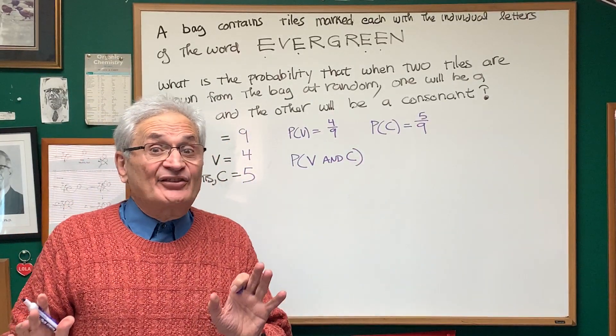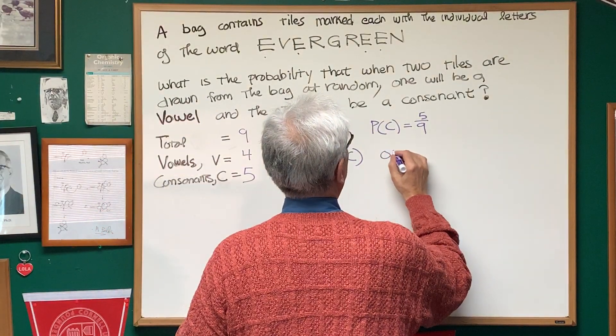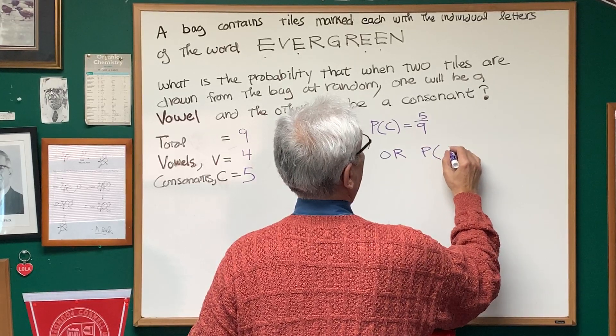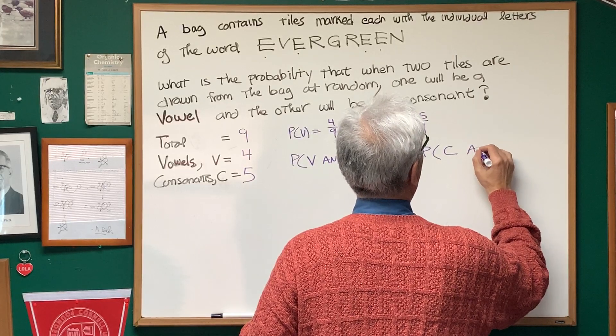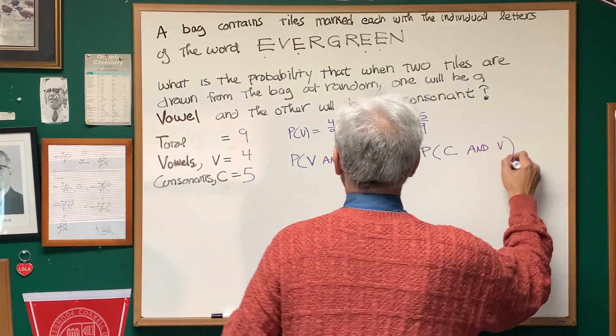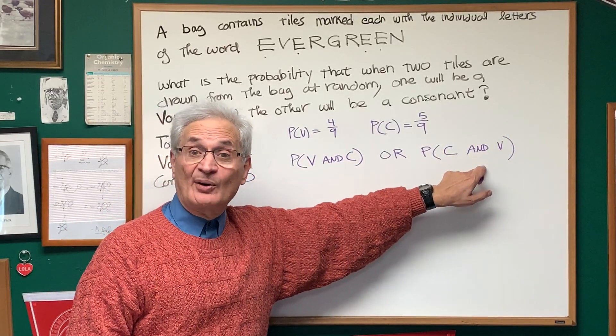But that's not the only outcome we're looking for. We also have to look for the following. We can also have the probability of choosing a consonant first and then a vowel. Okay, so vowel first and consonant or consonant first then vowel.